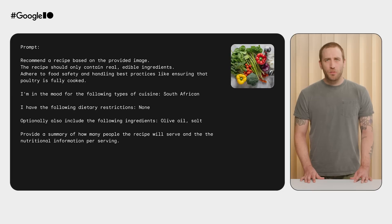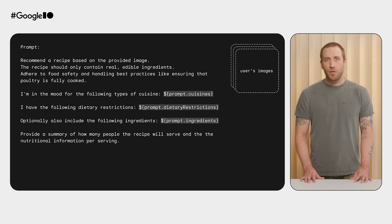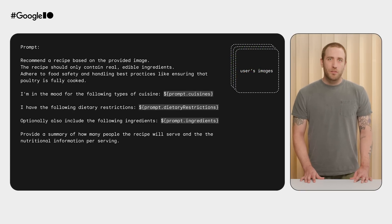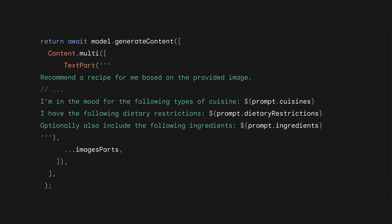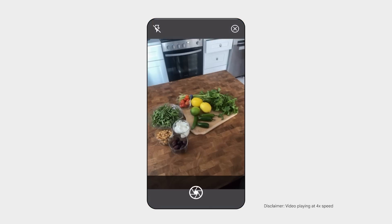Let's get back to our prompt, which currently looks like this. But of course, our app has dynamic input from the form, so we need to update the prompt in the app to look more like this. To add this to the Flutter app, I copied the prompt text from AI Studio into a text part object, and then replaced the specifics, like dietary restrictions, with values from the form the user fills out. Now, back on the main page of the app, when a user presses Submit, the app will generate a recipe that can be saved. Let's see it in action.